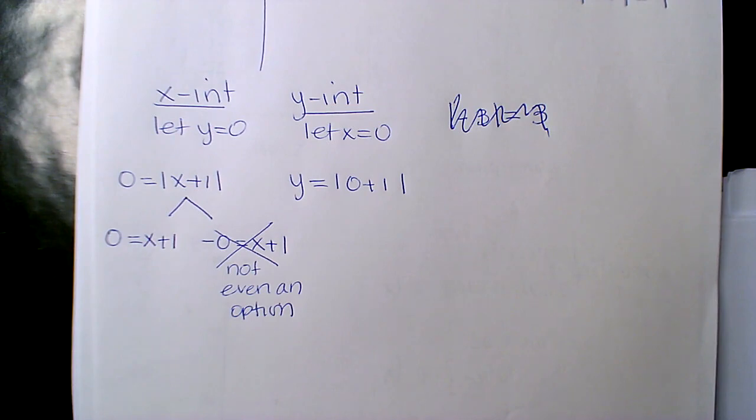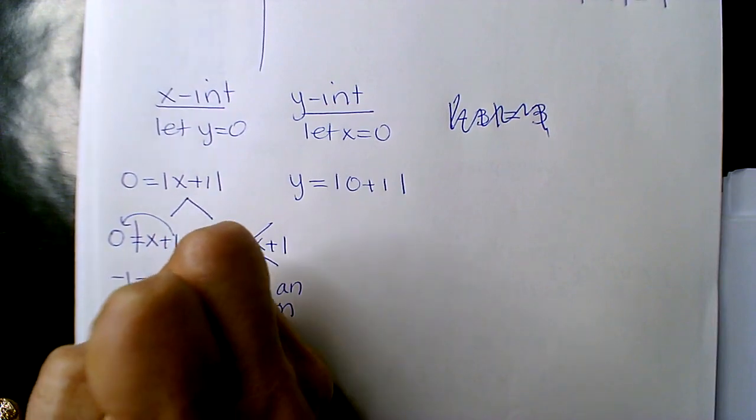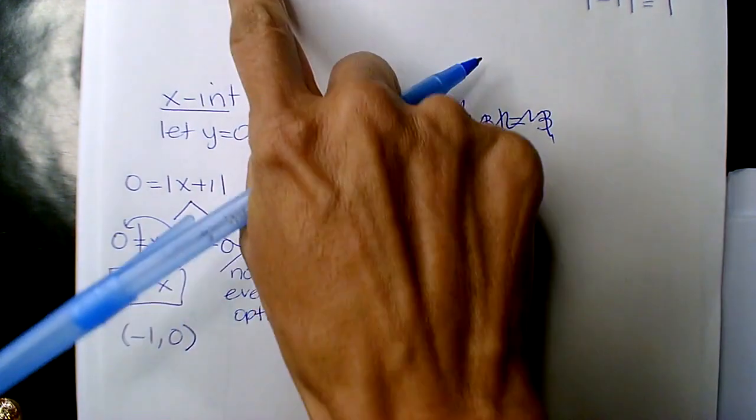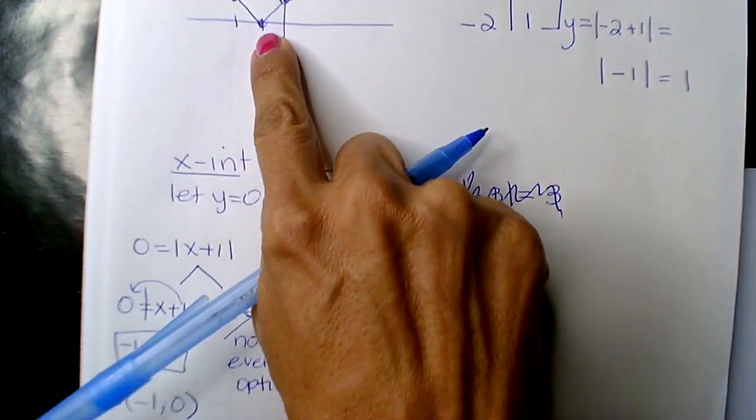So now you solve it. Inverse operate. And you get, so this is your y-intercept. I mean your x-intercept, which we already have on our graph. That's what it is.